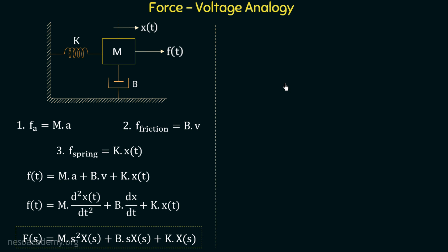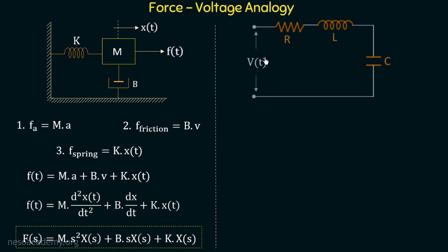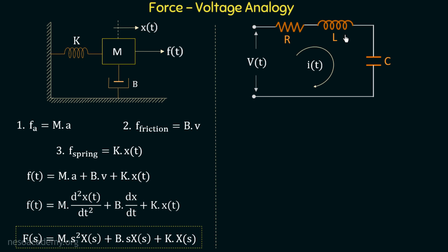Let us now define an electrical network in order to compare with this mechanical system. Consider this series RLC circuit in which the current in this circuit is equal to i(t). We will calculate the equilibrium equation for this network and then compare it with the equation of the mechanical system in order to establish a force voltage analogy. Applying Kirchhoff's voltage law, the total voltage in a loop is equal to zero. So: V(t) = i(t)·R + L·(di/dt) + (1/C)·∫i(t)dt, where i(t)·R is the voltage across the resistor, L·(di/dt) is the voltage across the inductor, and (1/C)·∫i dt is the voltage across the capacitor.